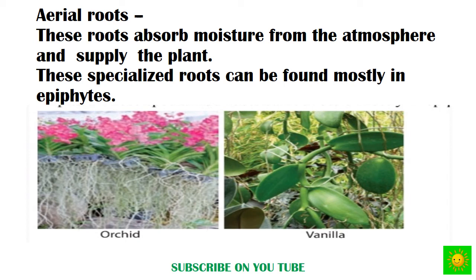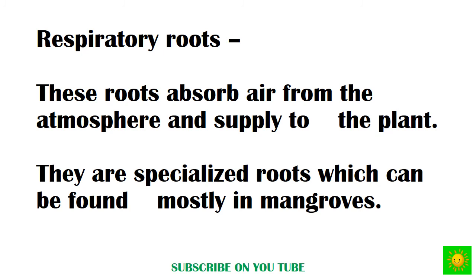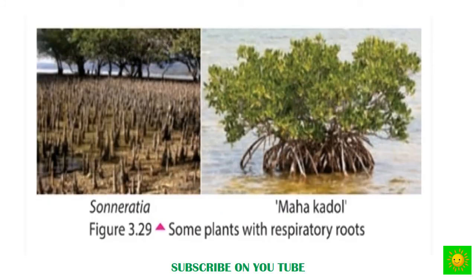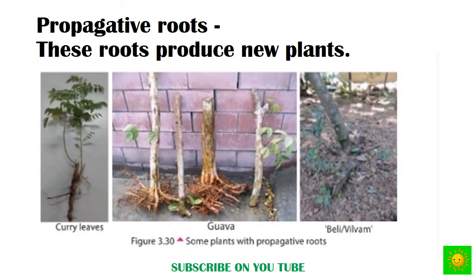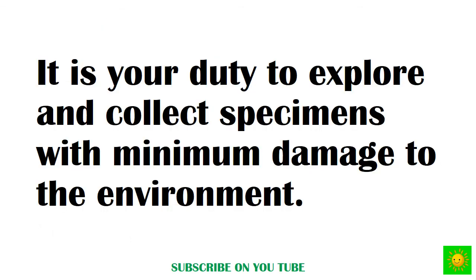These specialized aerial roots can be found mostly in epiphytes such as orchids and vanilla. Respiratory roots are roots that absorb air from the atmosphere and supply it to the plant; they are found mostly in mangroves, such as sonorita and mangrove species. Propagative roots produce new plants; examples include curry leaves, guava, and belli.